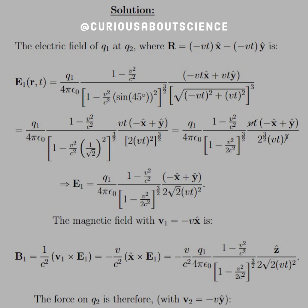The magnetic field with v1 equals negative V x-hat is B1 equals 1 over c² times v1 cross E1. Let the directions take the cross product through. x-hat cross x-hat gives zero, so we only care about x-hat cross y-hat, which gives z-hat.